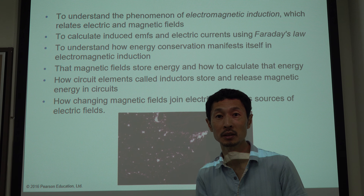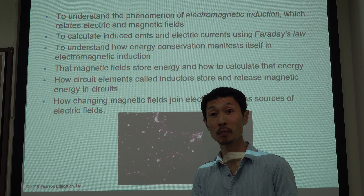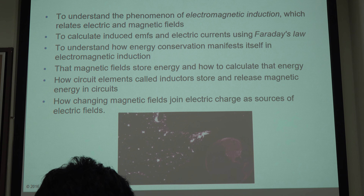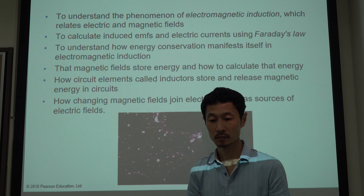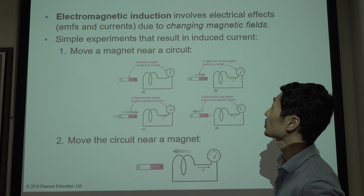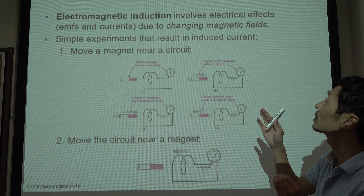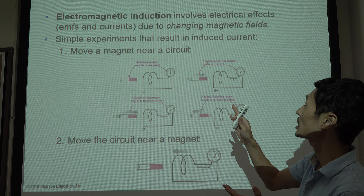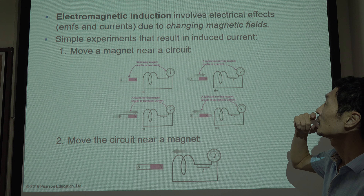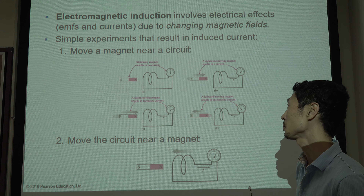Let's get started. Electromagnetic induction involves electrical effects — voltage and currents — due to changing magnetic fields. So now, if there is a changing magnetic field, there will be currents and an electric field.